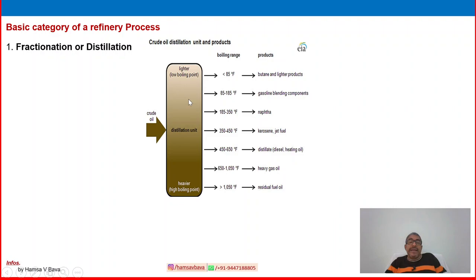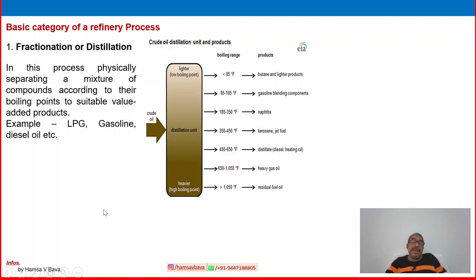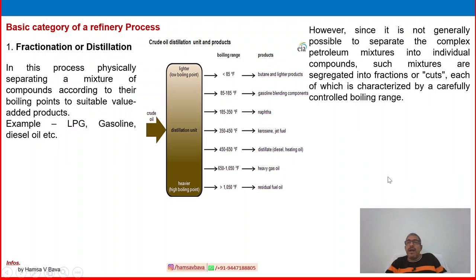Lighter hydrocarbons move up based on temperature: 85, 195, 350 — going up to 1050°F. According to that, you get various products. This is fractionation or fractional distillation. In this process, you are physically separating a mixture of compounds according to their boiling points to produce suitable value-added products — examples: LPG, gasoline, diesel, etc.